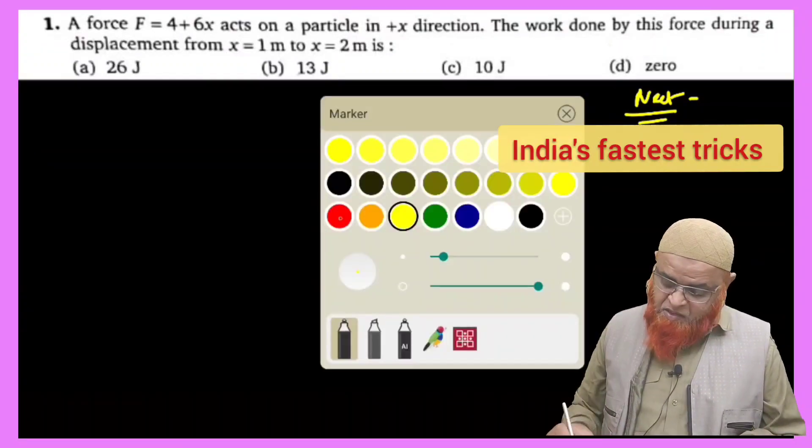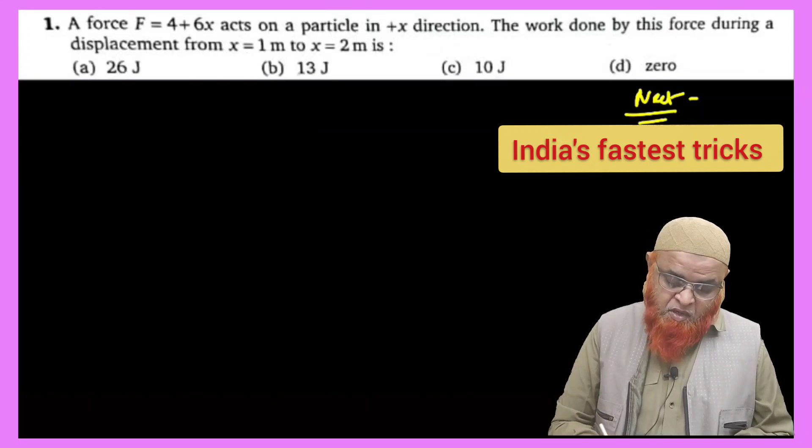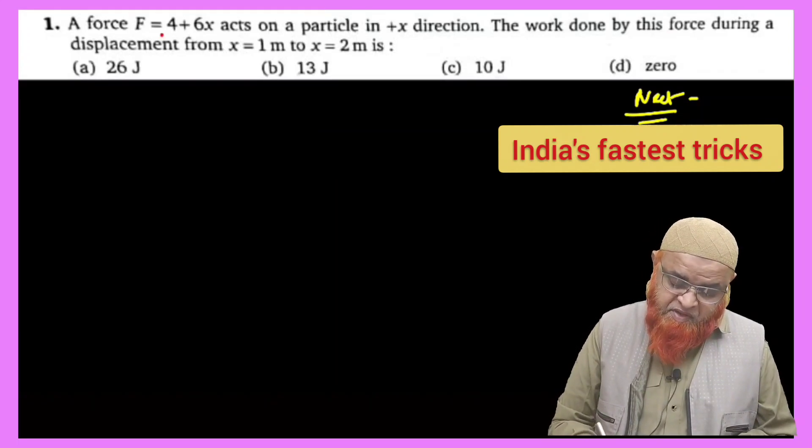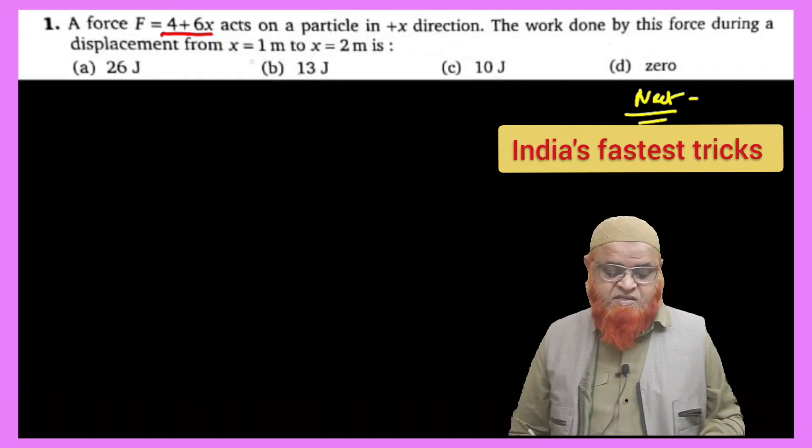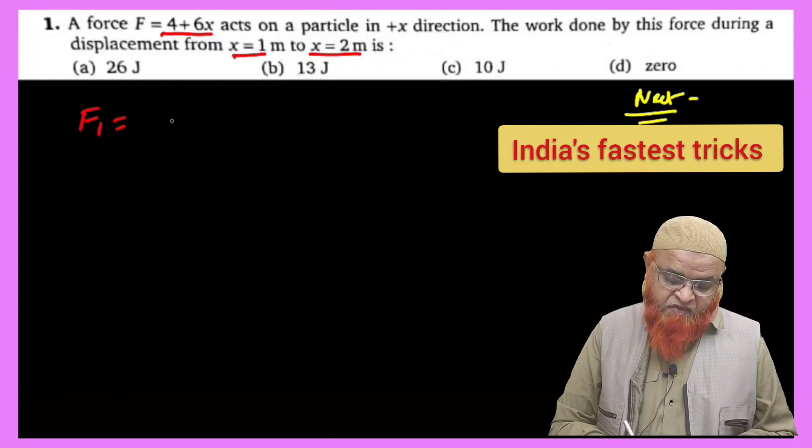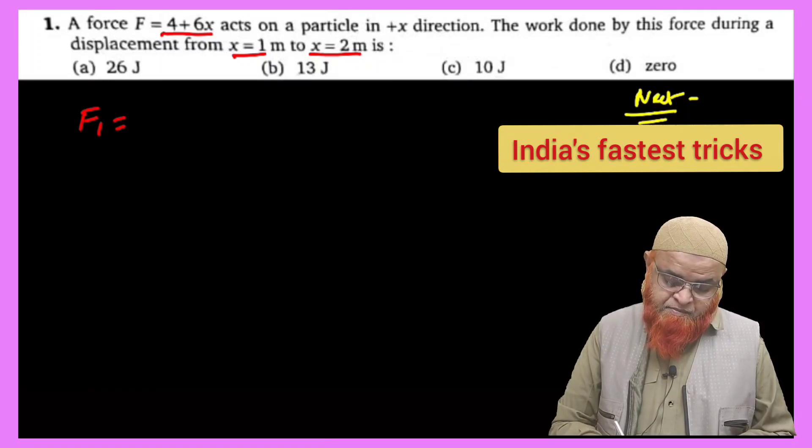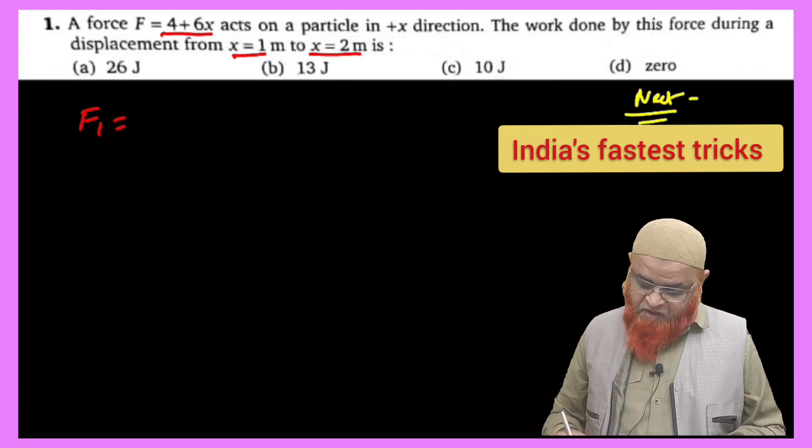First thing you have to understand here is what is given. Here he has given that F is equal to 4 plus 6x. So first of all, x equal to 1, next x equal to 2. You can find out F1.